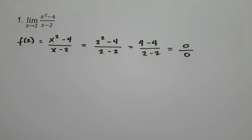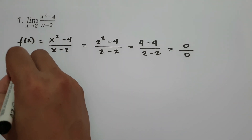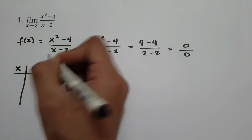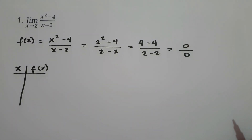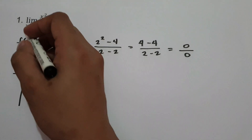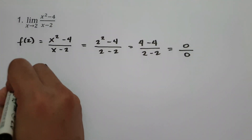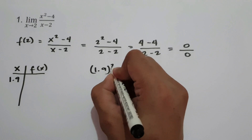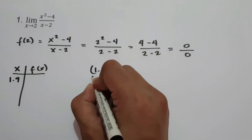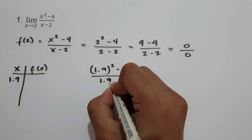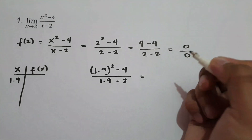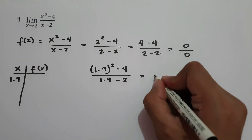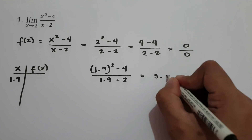But if we make a table of x and f(x) and set values of x closer to 2 — let's say x = 1.9 — we compute 1.9 squared minus 4 all over 1.9 minus 2. If we plug this in, we get 3.9.